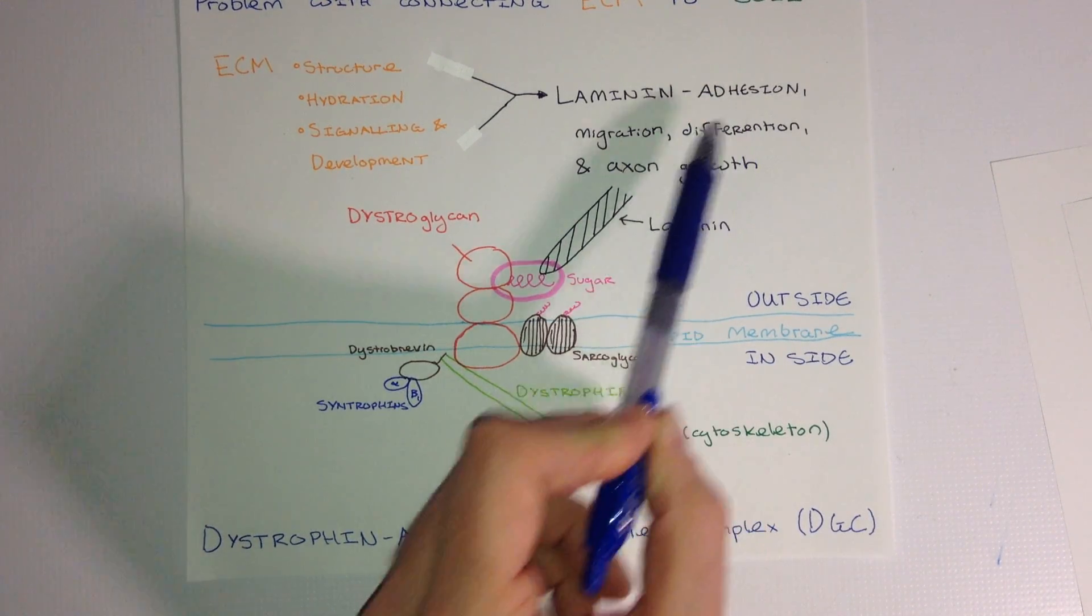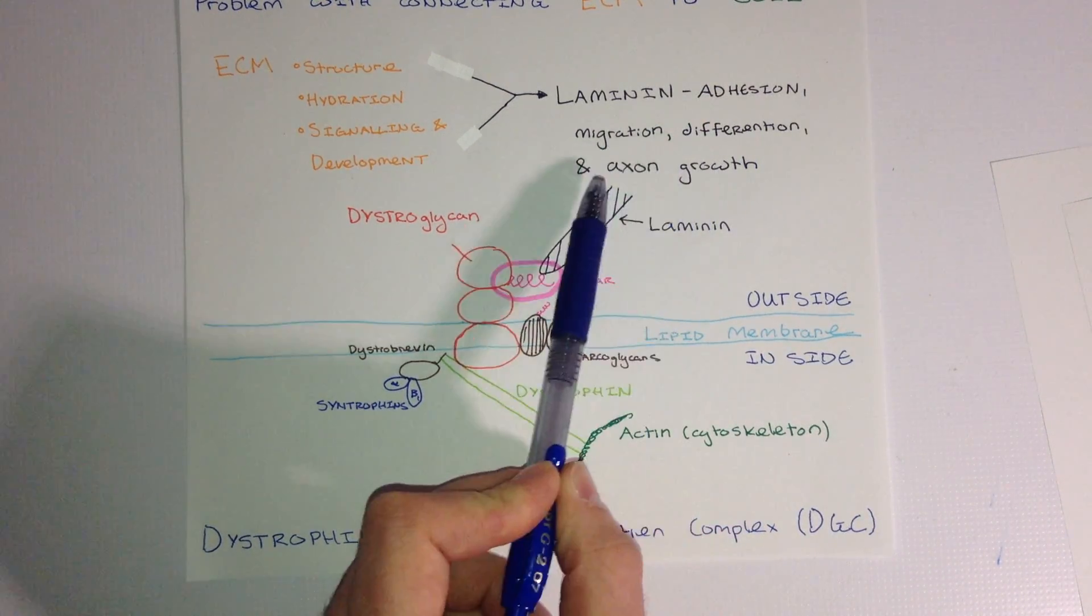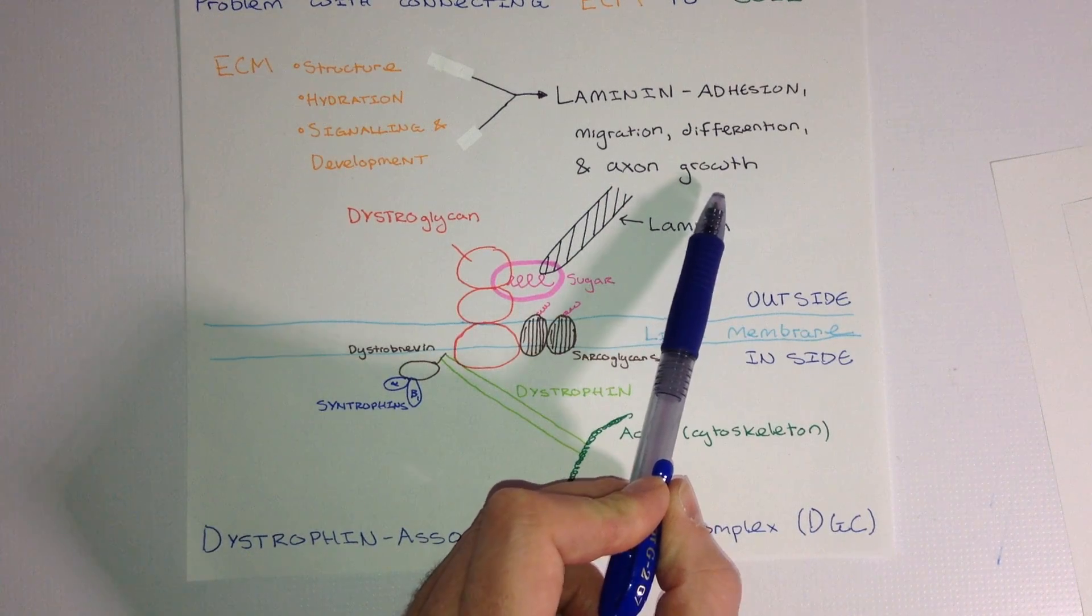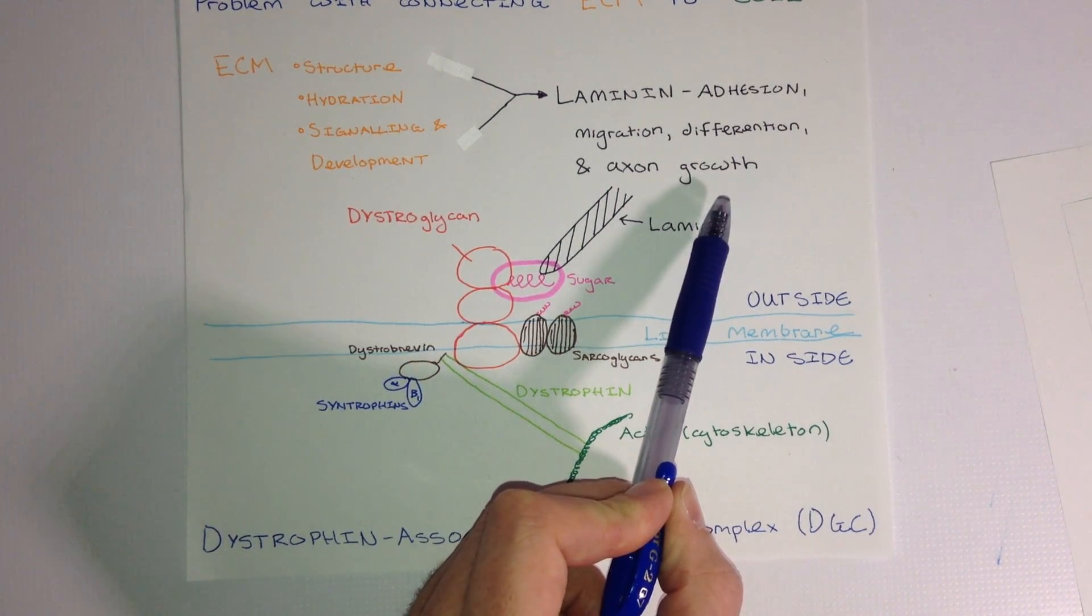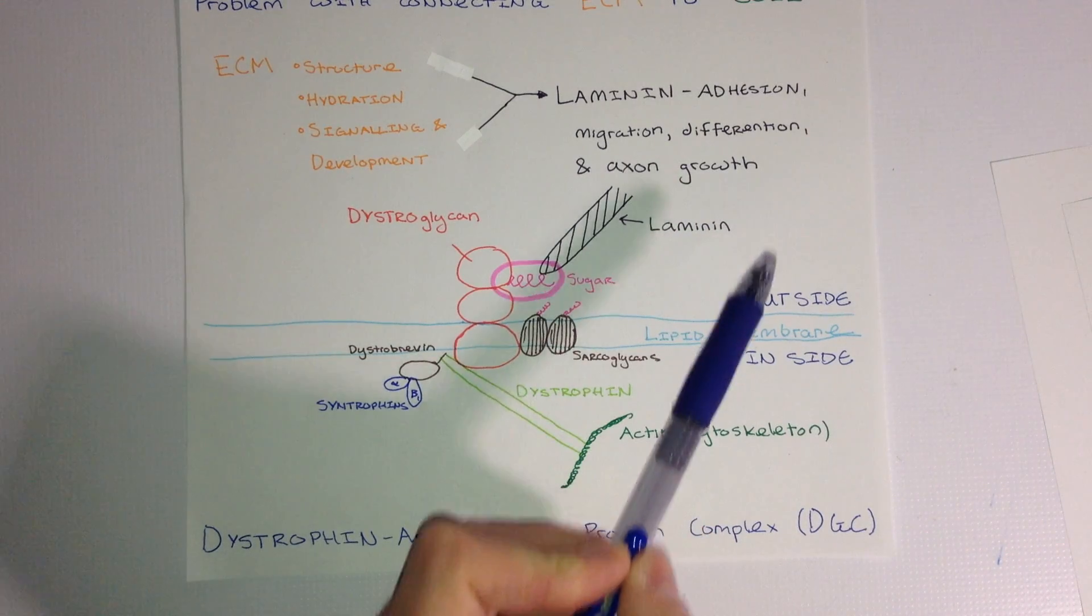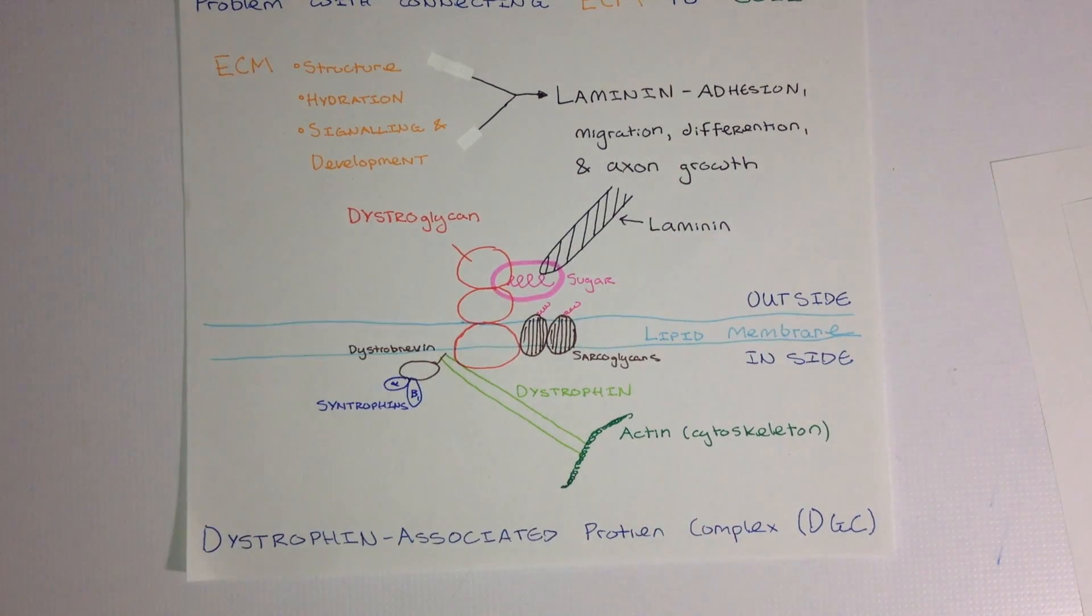And the migration, differentiation, and axon growth of new neurons is disrupted. This leads to structural and mental impairments in the brain.